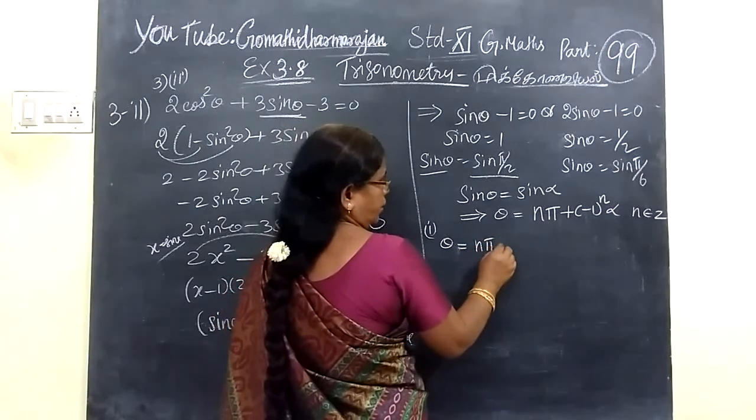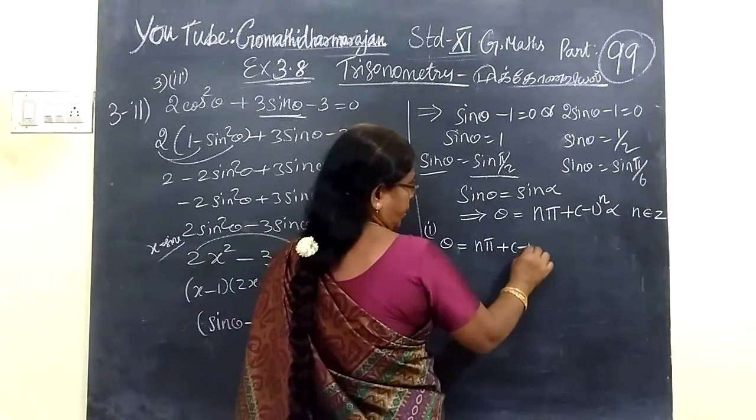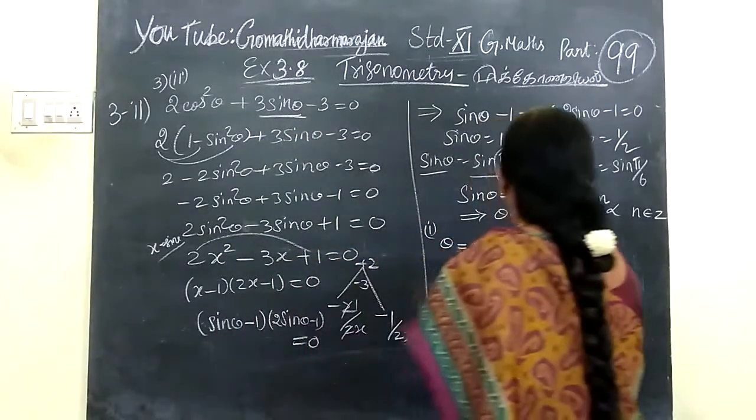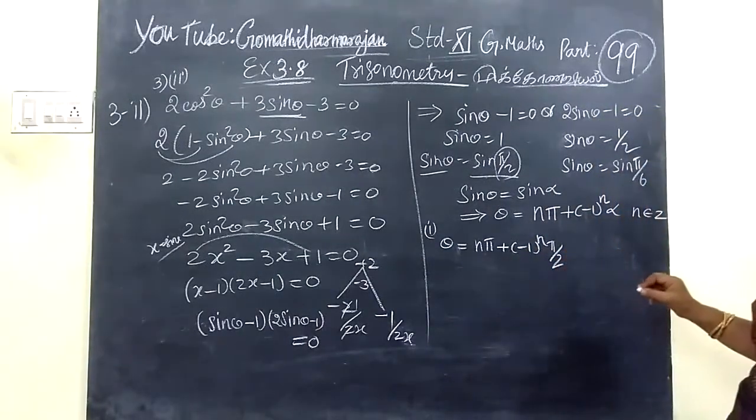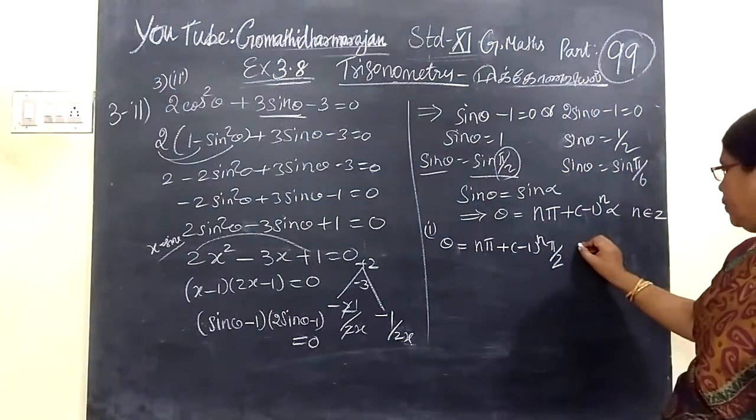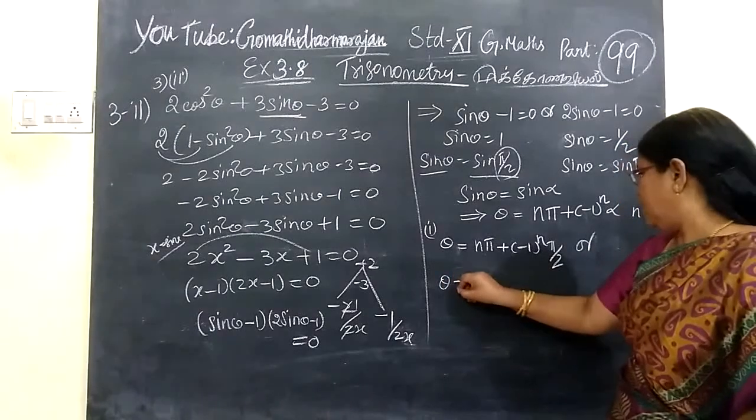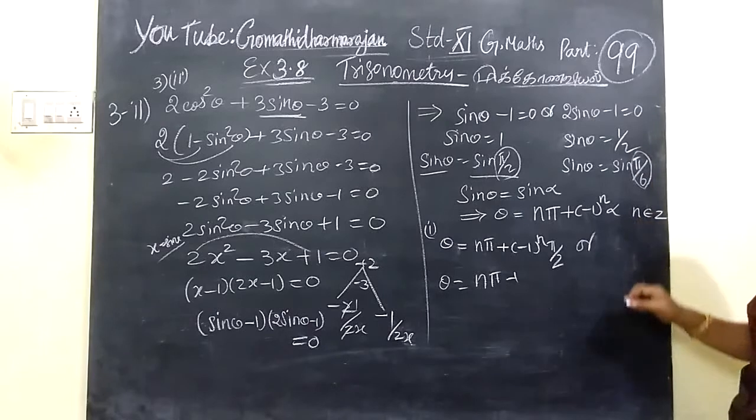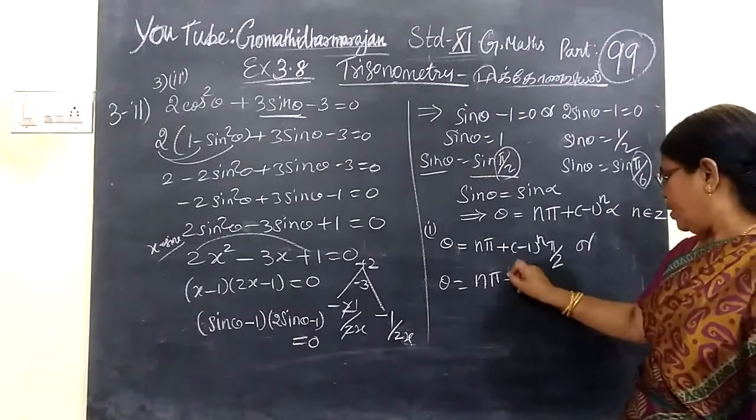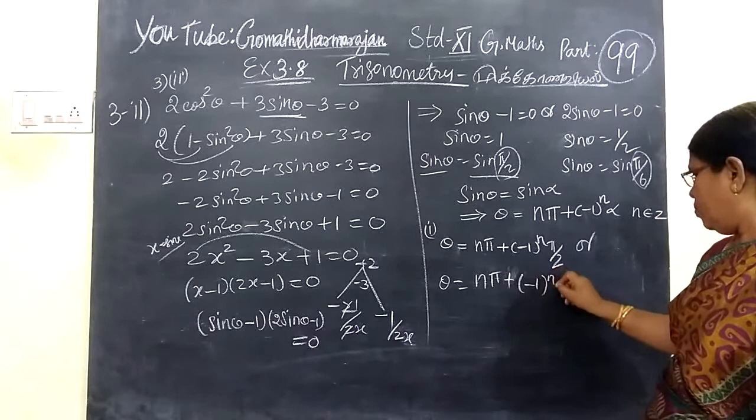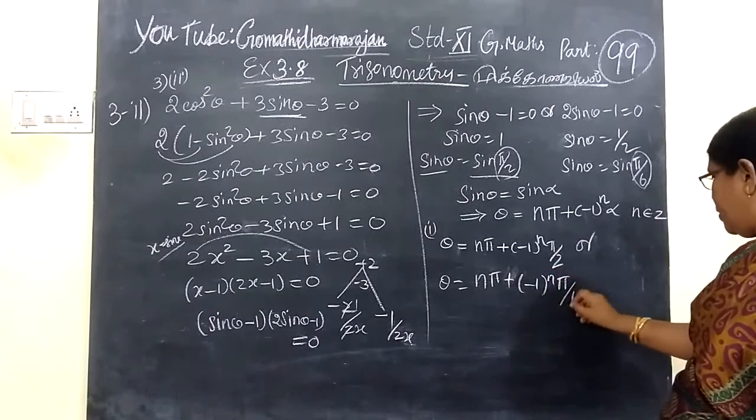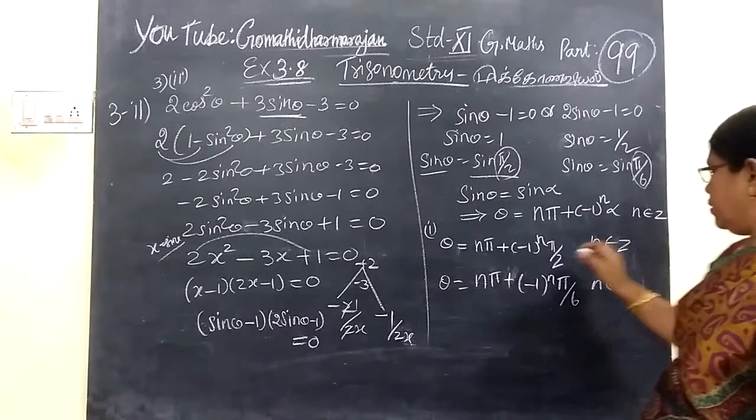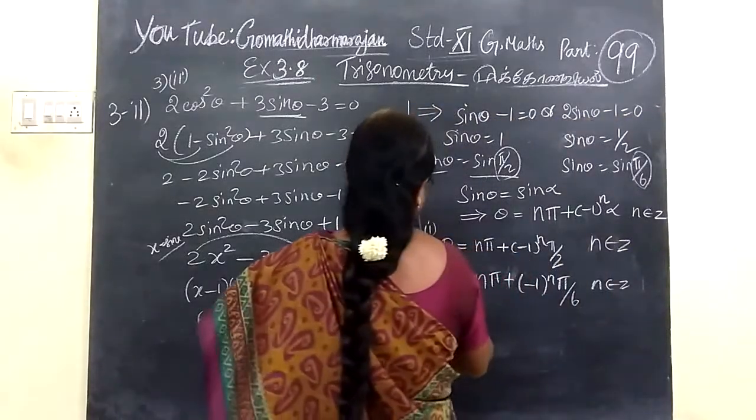Next one, theta is equal to n pi plus minus alpha where alpha is pi by 6. So n pi plus minus pi by 6 where n belongs to Z. This is a general solution. So these are all general solutions.